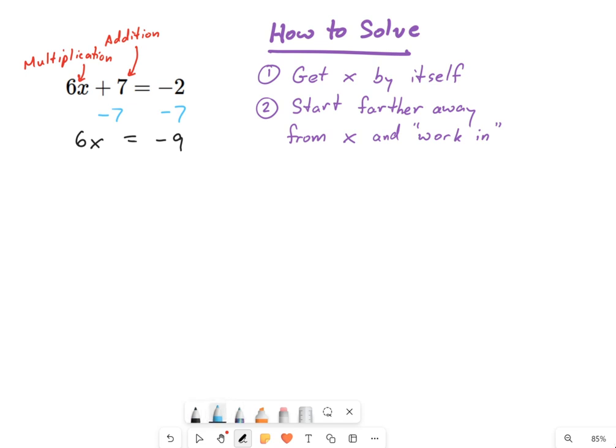Now I'm going to keep working my way closer to x. This time, it's the 6 that's closest. And if you remember, that's multiplication from up top. So what I'm going to do is the opposite operation. I'm going to do division.